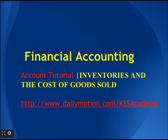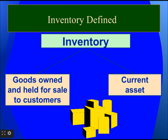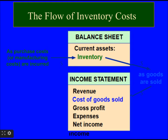Hello everyone, today we are going to learn about inventories and the cost of goods sold. Inventory is defined as goods owned and held for sale to customers, and it is also called a current asset. The flow of inventory costs: purchase costs or manufacturing costs are incurred whenever we purchase inventory.